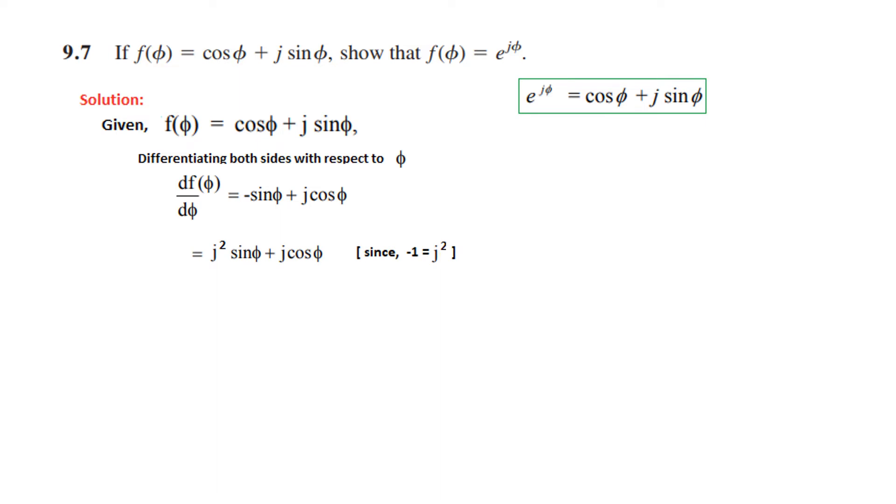And now minus sin, or minus 1, is actually equal to j squared. So minus 1 is replaced by j squared. Then we take j common and this is the function defined, so we can write it to be equal to jf(φ).